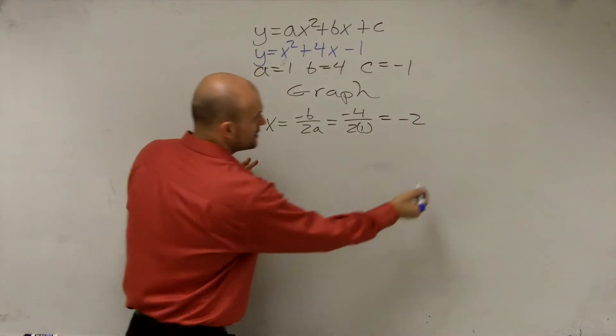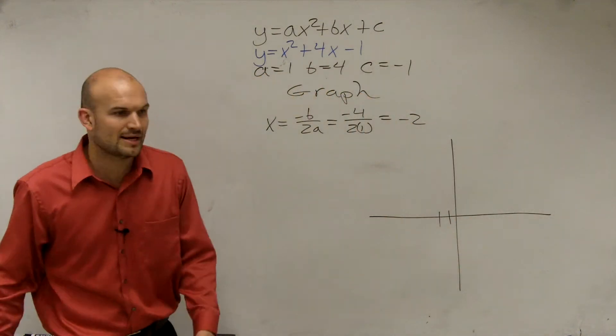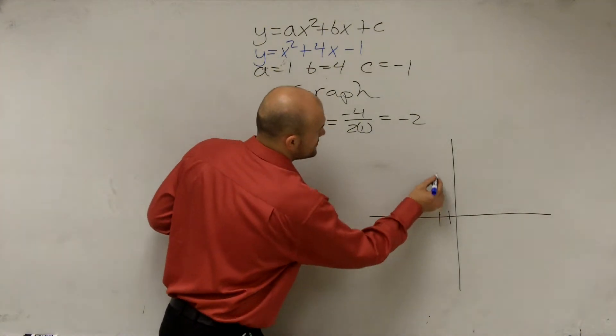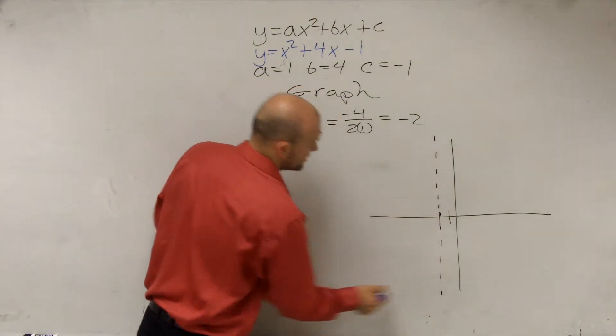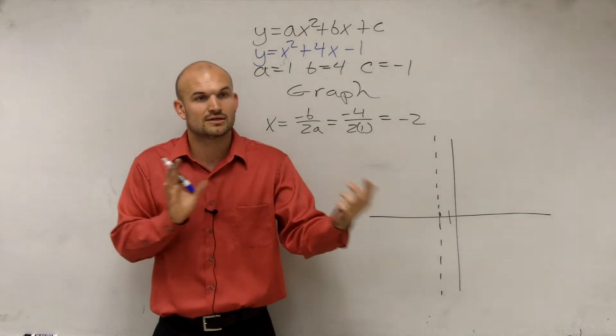So to graph it, what we're going to do is you go to your graph, and you go to where negative 2 was. So everybody on their graph goes to your negative 2 and graph this axis of symmetry. Remember, this is the line that's going to reflect your graph.